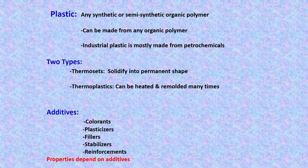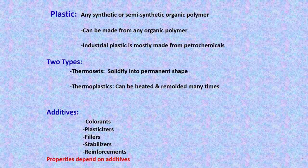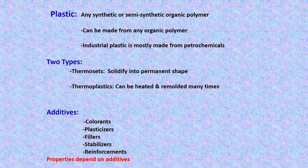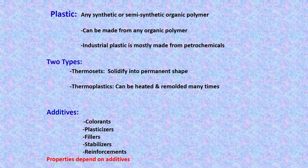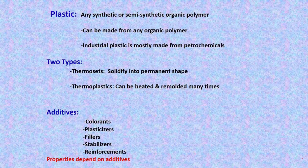Plastic is any synthetic or semi-synthetic organic polymer. It can be made from any organic polymer, but the majority of industrial plastic is made from petrochemicals. There are two types of plastic: thermosets, which solidify into a permanent shape, and thermoplastics, which can be heated and remolded many times.